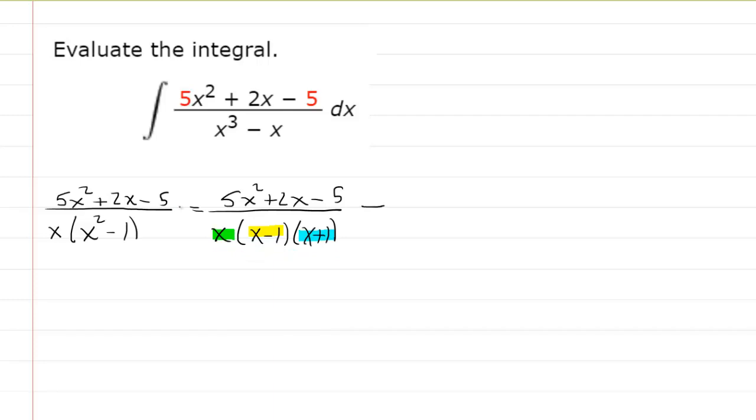And when you have distinct linear factors, it's the easiest case. You're going to basically take these constants, A, B, and C, and put them over the distinct linear factors. So in other words, you'll have A over your first linear factor plus B over your next linear factor plus C over your third linear factor. So that would be the setup.